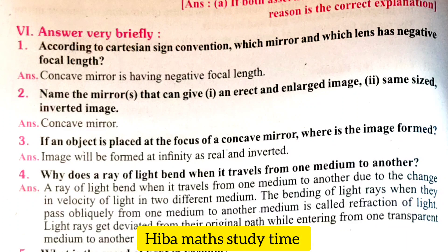Concave mirror has a negative focal length. Second question: name the mirrors that can give an erect and enlarged image, and a same-sized inverted image. Answer: concave mirror.